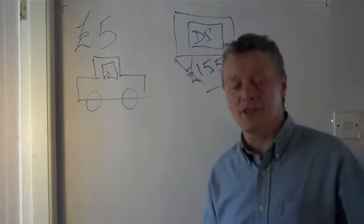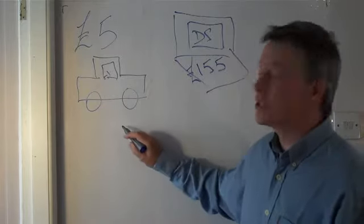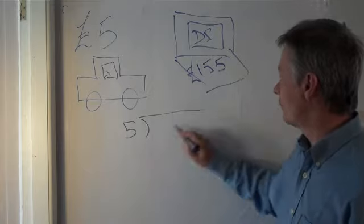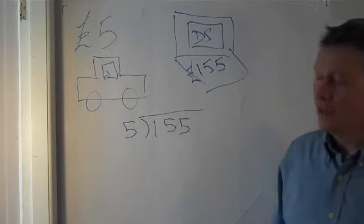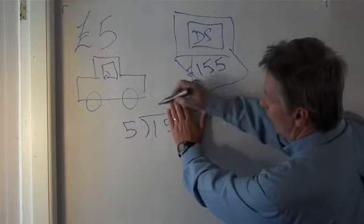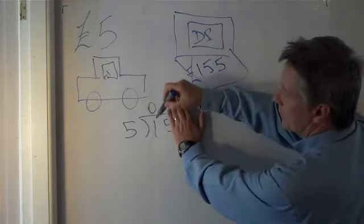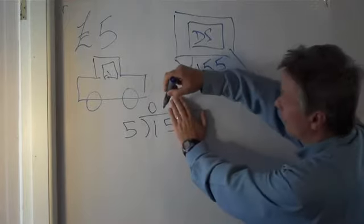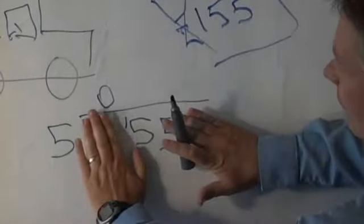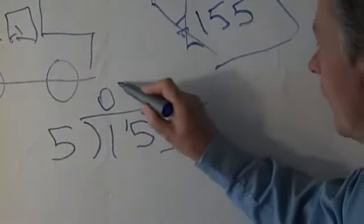Well, there's two ways of doing that. The first one is to use the traditional way, which is to do this sum. And we say, how many lots of £5 is there in £1? Well, there's not. And because there's one still left over, then I'm going to move that one across to there, and I'm going to say, how many lots of £5 are there in £15? Well, there's three.